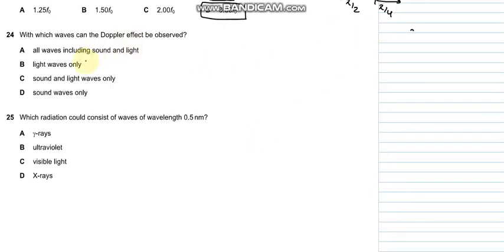Question number 24 says that with which waves can the Doppler effect be observed. All waves including sound and light, yes, that's the correct answer. Question 25: which radiation could consist of wavelengths 0.5 nanometers? It is gamma and x-rays but it's closest to x-rays, so D is the appropriate answer.